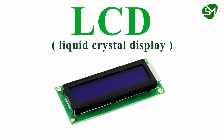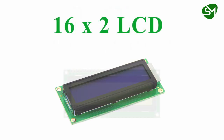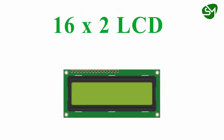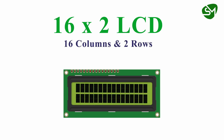LCD displays are available in many variants, but the display we are going to use is the 16x2 LCD display. As the name says, there are 16 columns and two rows in this display. Each display element can display one character or number, so totally we can display 32 characters at a time in this display, as we have 16 columns and two rows.